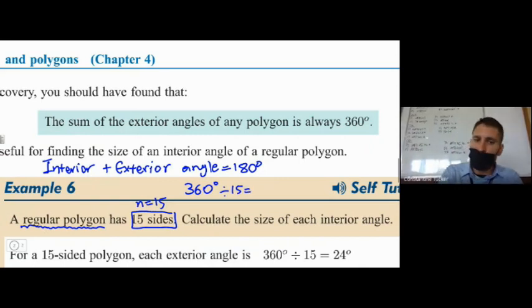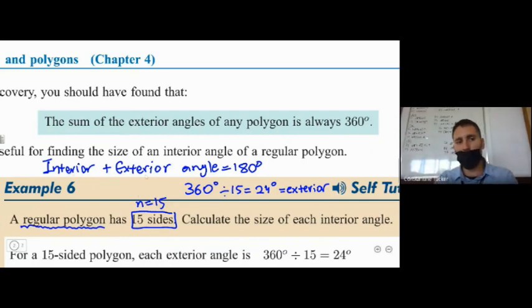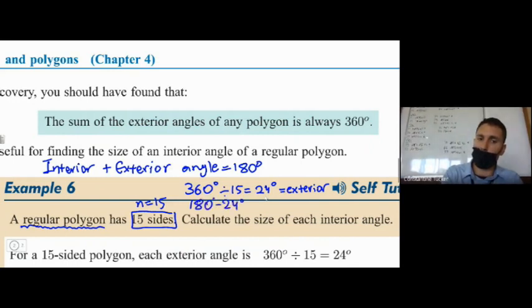We get 24. So each of the exterior angles is equal to 24 degrees. So what do we do to find the interior angle? What is the connection between the interior and the exterior angle? They add up to 180. So if the exterior angle is 24, how do we find the interior? 180 minus 24, and that gives us...